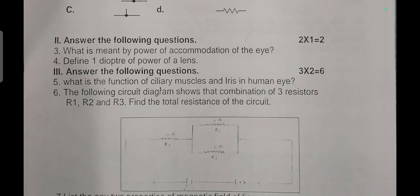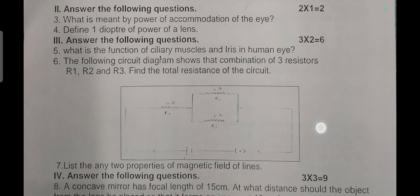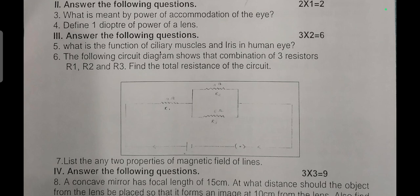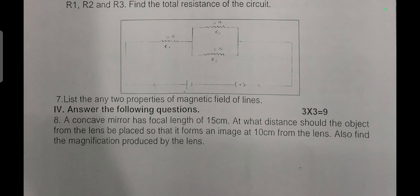Answer the following questions, each carries one mark. What is meant by the power of accommodation of the eye? Define one diopter of power of a lens. Answer the following for two marks: What is the function of ciliary muscles and iris in human eye? The following circuit diagram shows the combination of three resistors R1, R2, and R3. Find the total resistance of the circuit. List any two properties of magnetic fields of lines.